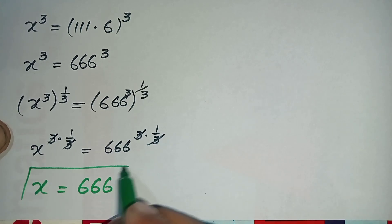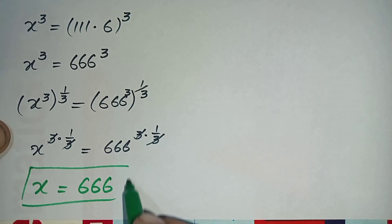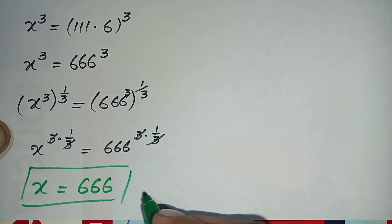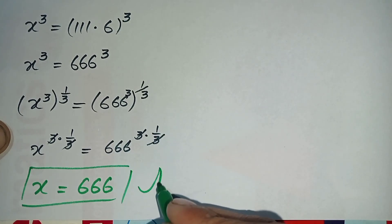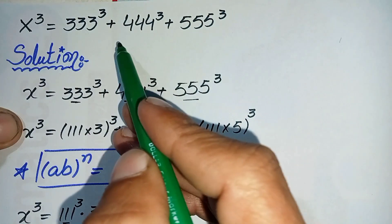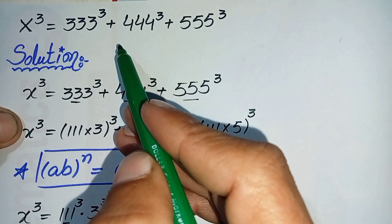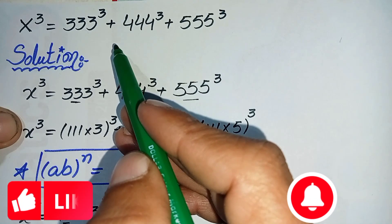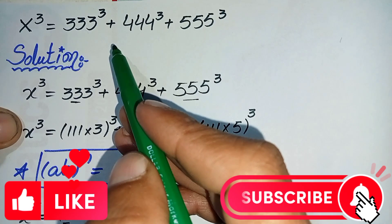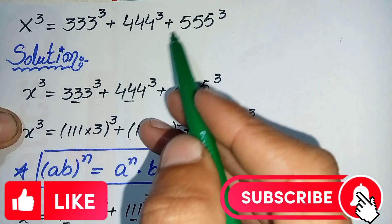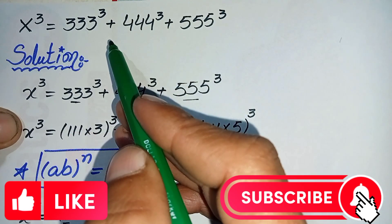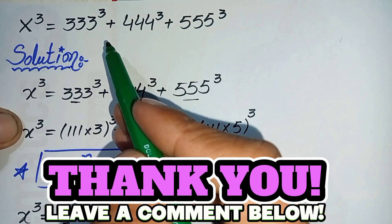So finally, x = 666 is the answer and solution of this interesting exponential math problem. Don't forget to subscribe to the YouTube channel for more interesting math videos. Thank you so much for watching — take care, see you in the next video!